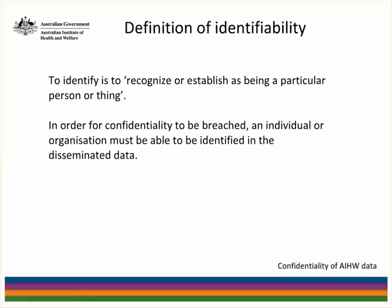What is identifiability? According to the Macquarie Dictionary, to identify is to recognise or establish as being a particular person or thing. In order for confidentiality to be breached, an individual or organisation must be able to be identified in the disseminated data.